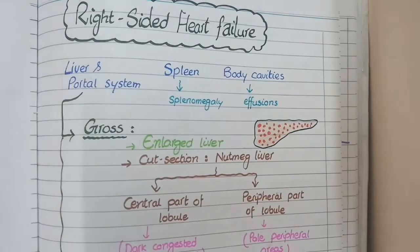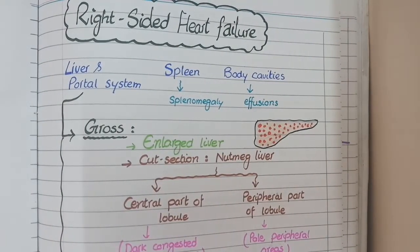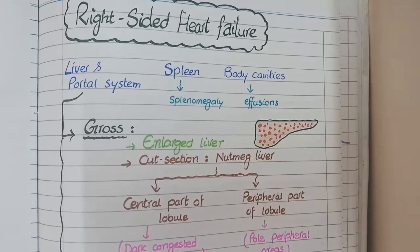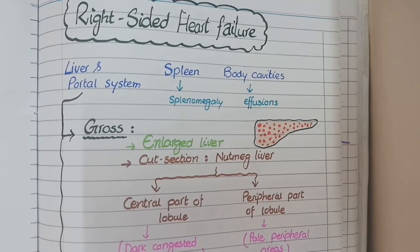Now we will study the pathological and morphological features of right-sided heart failure, including the description of nutmeg liver, which is very important from an exam's point of view.